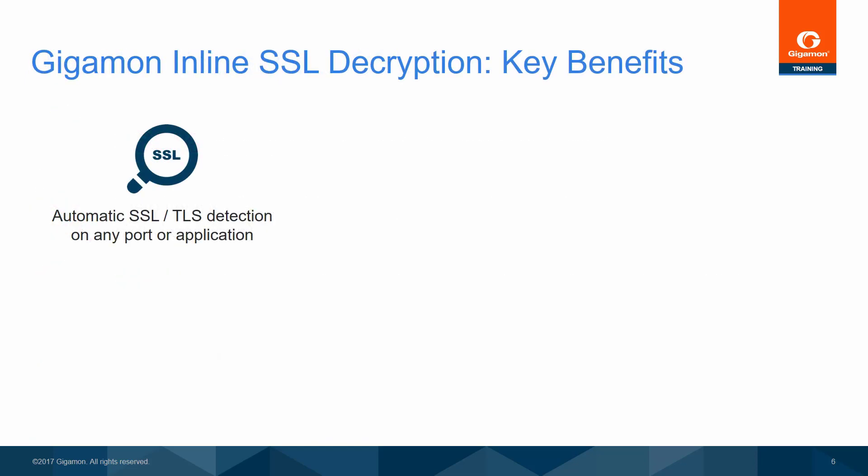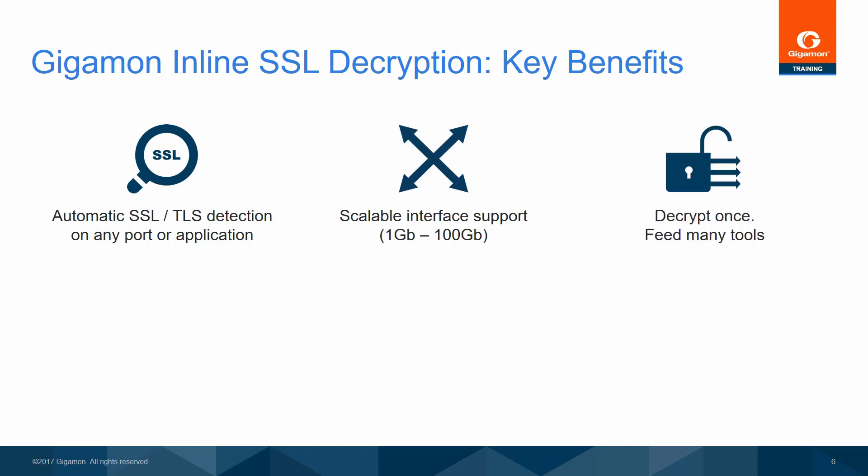With the Gigamon inline SSL decryption functionality, you can detect SSL encrypted traffic on any port or application. In addition, interface support can be scaled from 1 gigabit to 100 gigabit ports. With inline SSL decryption, you can decrypt traffic once and then share the decrypted packets with multiple tools located either inline or out-of-band.